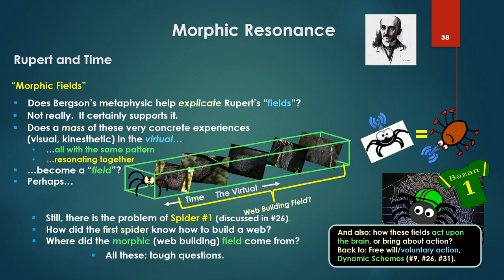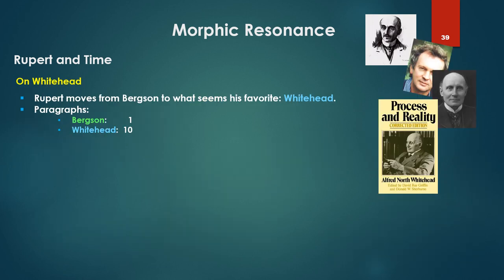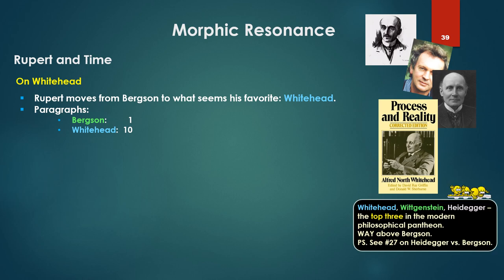Rupert moves on from Bergson to what seems his favorite — Whitehead. Paragraphs devoted to each: Bergson one, Whitehead ten. Of course, Whitehead, Wittgenstein, and Heidegger are considered the top three in the modern philosophical pantheon, way above Bergson by everyone's accounts. We looked in number 27 at Heidegger versus Bergson, and there Heidegger did not come off that well, especially when considering the hard problem.